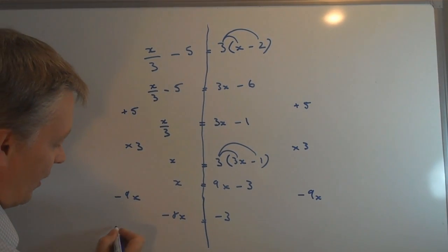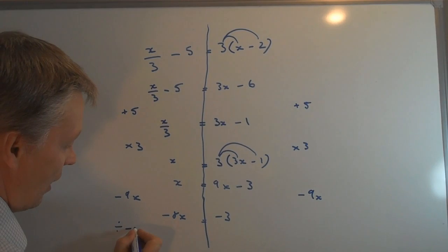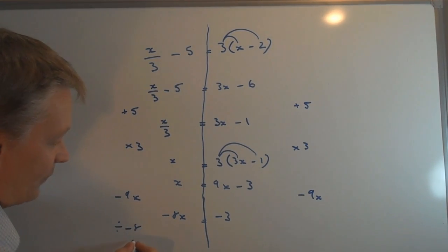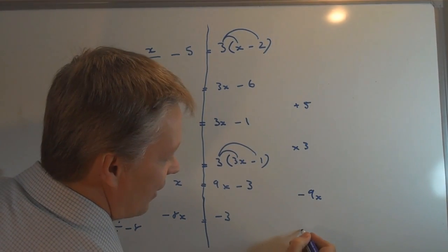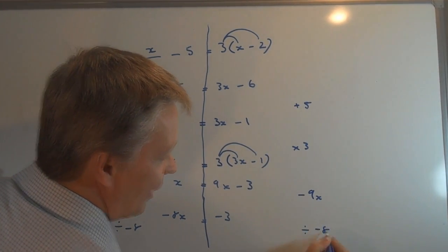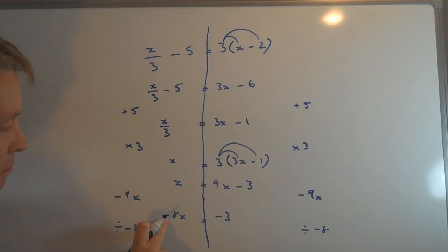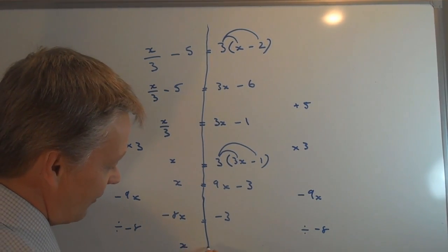So on this side I'm going to divide by minus 8. On this side I'm divided by minus 8. On this side I'm going to divide by minus 8. So minus 8x divided by minus 8 is x on its own.